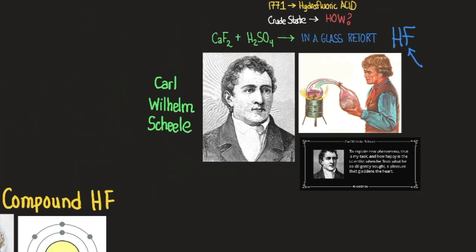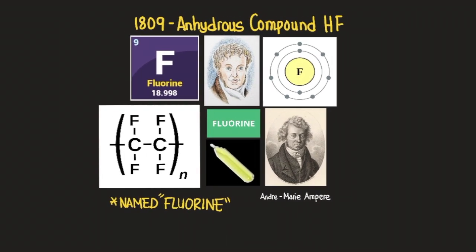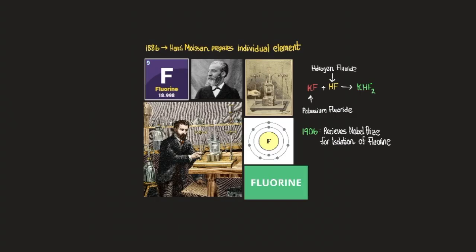André-Marie Ampère was the first person to give fluorine its name. Although he didn't fully separate it, he obtained it in a pure state as anhydrous hydrofluoric acid and named the element fluorine. He built on the work of previous scientists to create more purified hydrofluoric acid, which became the stepping stone for Henri Moissan to finally liberate fluorine from its atomic bond with hydrogen.